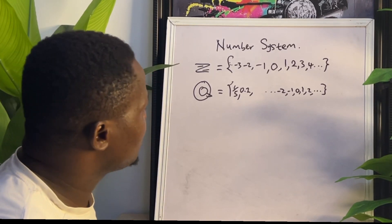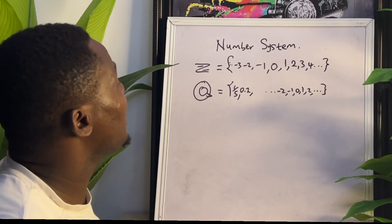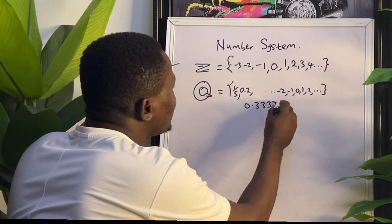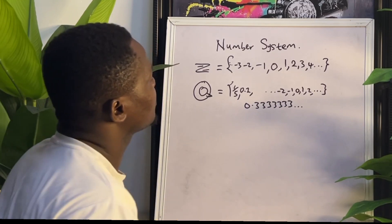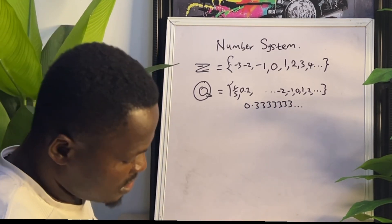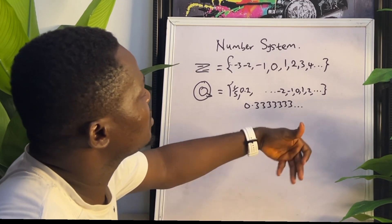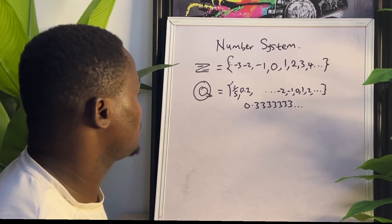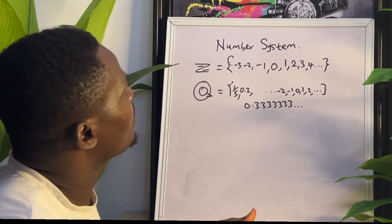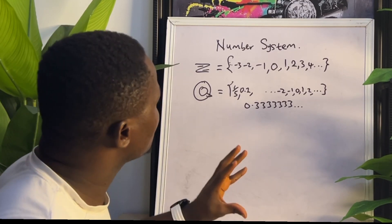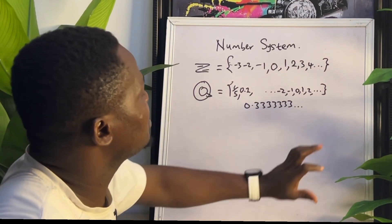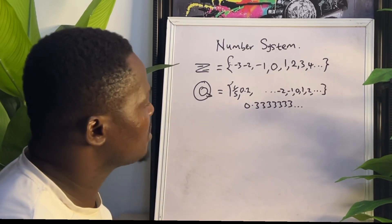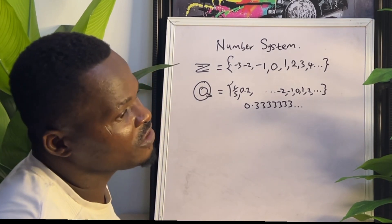There are some decimals that are very long — non-terminating — but at the same time they are repeating. For example, 0.333333333 and so on: this is non-terminating, the dot dot dot shows it continues, and the 3s keep repeating. It can be found inside the rational number system. In conclusion, the rational number system has all the integers, repeating decimals, terminating decimals, and fractions whose denominators are not zero.